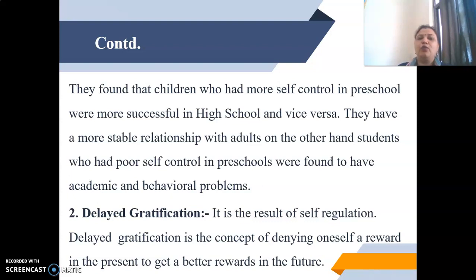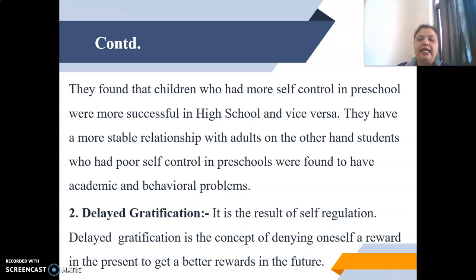They found that children who had more self-control in preschool were more successful in high school and had more stable relationships with adults. On the other hand, students who had poor self-control in preschool were found to have academic and behavioral problems. This means self-regulation is very essential to control our behavior and works behind our success. The second contribution is delayed gratification — it is the result of self-regulation, and is the concept of denying oneself a reward in the present to get a better reward in the future.